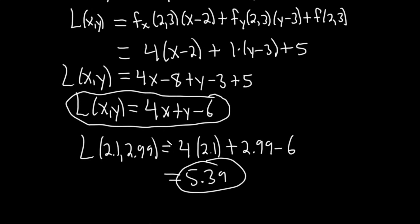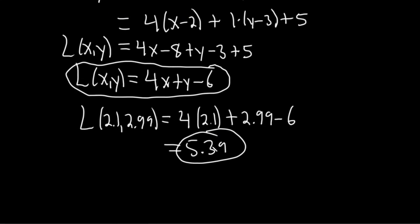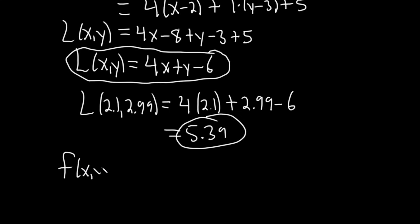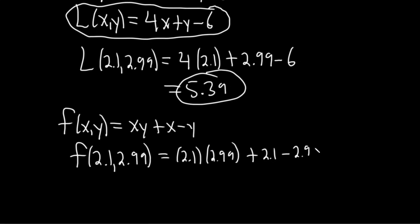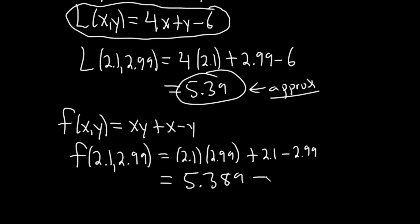I wonder what the real value is, so let's plug that in just for comparison. f(x,y) equals x times y plus x minus y. So f(2.1, 2.99) equals 2.1 times 2.99 plus 2.1 minus 2.99. These types of problems are always a little tedious with all these decimals. I got 5.389. So the approximation is 5.39 and the actual value is 5.389 — that's really close! That's the power of calculus.